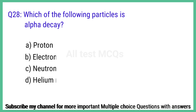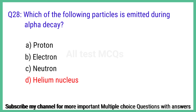Question number 28. Which of the following particles is emitted during alpha decay? The right answer is option D: Helium nucleus.